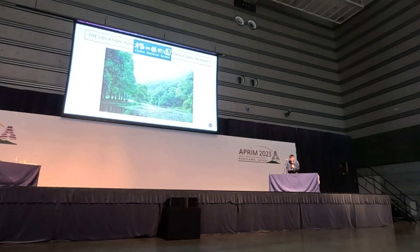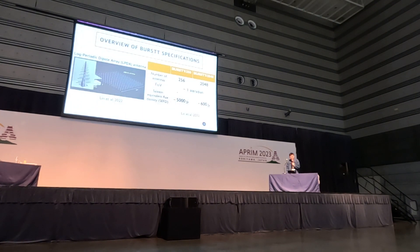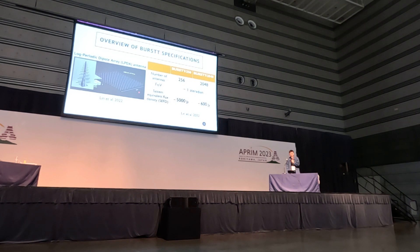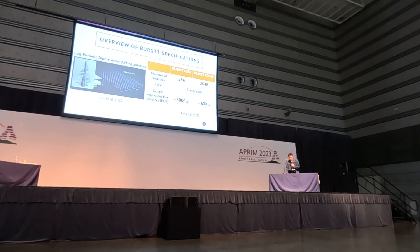Here is the overview of BURST. BURST is using a log-periodic dipole array, LPD, antenna which looks like a Christmas tree. In the first phase of BURST, they are going to build about 256 antennas, which gives about 5,000 Jansky sensitivity. This is not so good, but it is useful enough to detect some bright and nearby FRBs because we have an extremely large field of view. In the second phase of BURST, they can increase the number of antennas to more than 2,000, which improves sensitivity to 600 Jansky and allows us to detect FRBs at a higher redshift range.